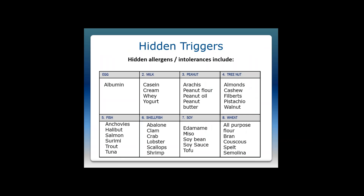There are hidden triggers for allergens and intolerances — items included in ingredient lists that many people, whether chefs, servers, or anyone, don't realize are variations of a common allergen. For instance, albumin is an egg product, casein is a milk product, arachis is a type of peanut, surimi is a fish product, edamame is a soy product, and bran and spelt are wheat. Even a piece of bread used to keep brown sugar soft can affect a person with a wheat allergy.